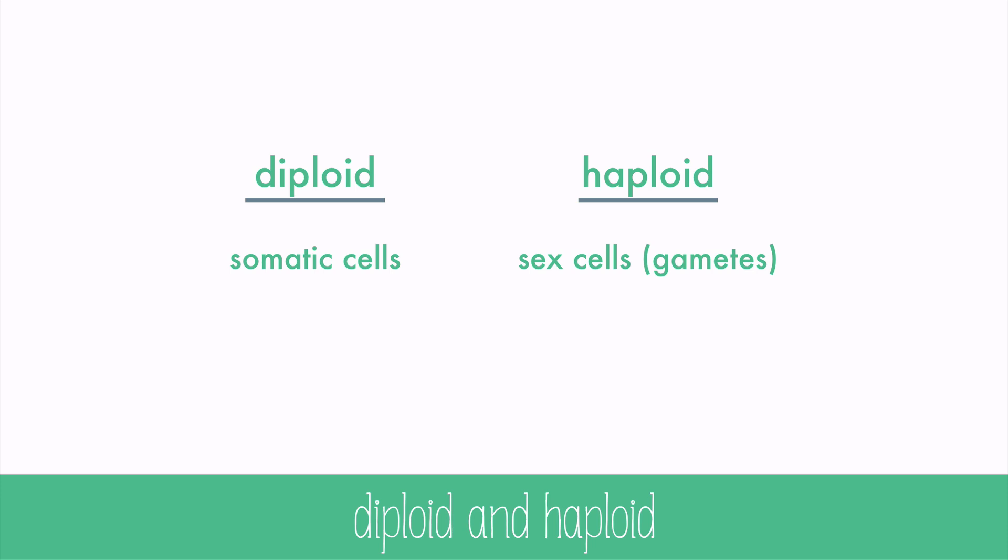Males make sperm in the testes and females make eggs in the ovaries. Males make sperm continually from puberty, but females are born with all of their eggs in the ovaries and only begin to release eggs after puberty.